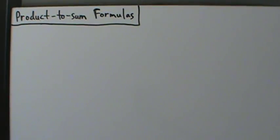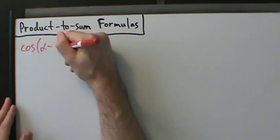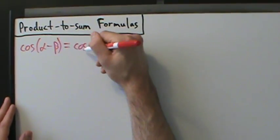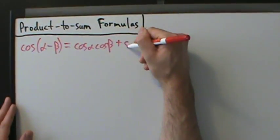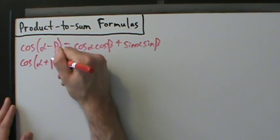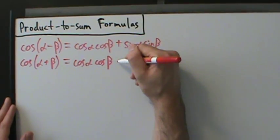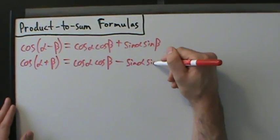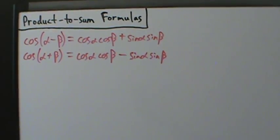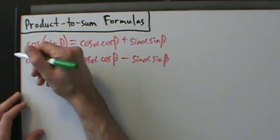So let's go ahead and write down those sum and difference formulas first. We'll do cosine alpha minus beta on top: cosine(α − β) = cos α cos β + sin α sin β. And then directly below that: cosine(α + β) = cos α cos β − sin α sin β. Now what we're going to do — something that might seem a little weird, but you may remember doing this in a pre-calculus or college algebra course when solving systems of equations — we're going to add these two equations together.